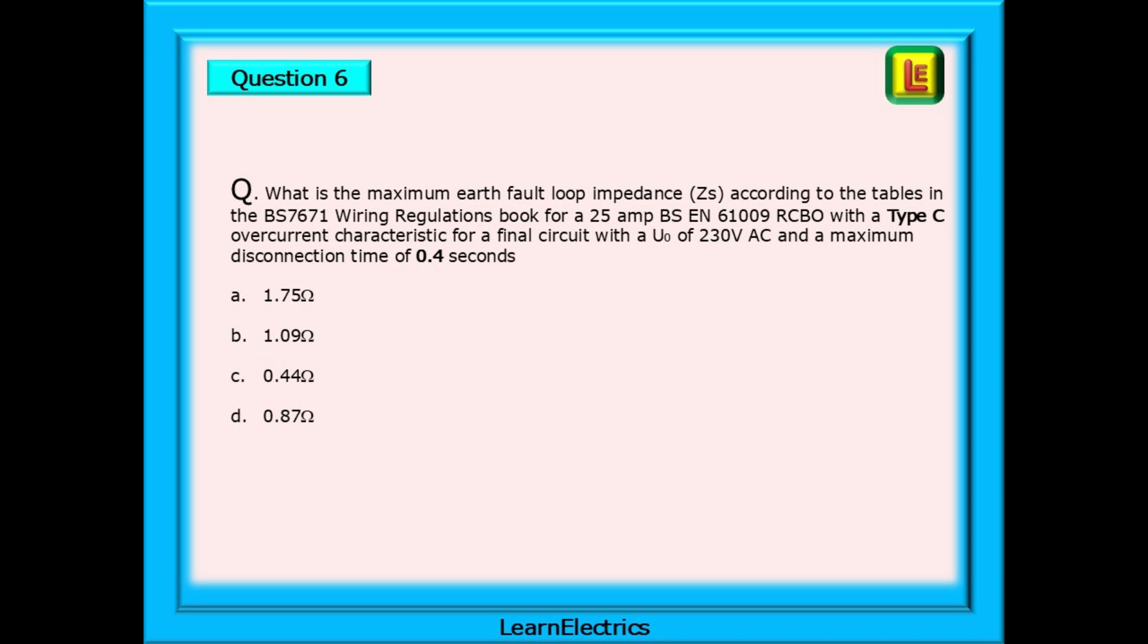Question 6 asks, What is the maximum earth fault loop impedance ZS according to the tables in the BS 7671 wiring regulations book for a 25 amp BS EN 61009 RCBO with type C overcurrent characteristics for a final circuit with a U0 of 230 volts AC and a maximum disconnection time of 0.4 seconds? Pause the video and find the answer.